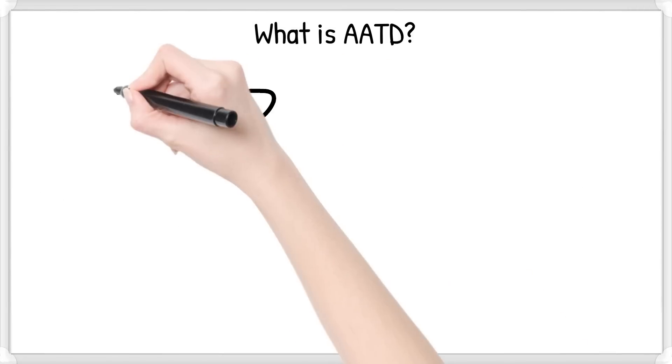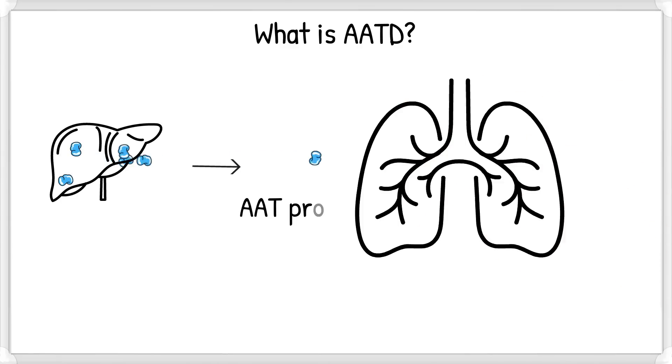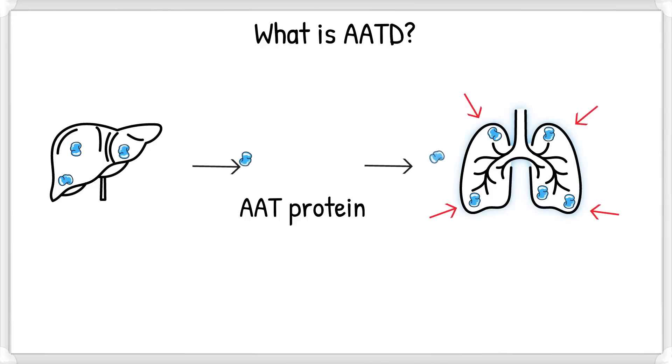So, what is AATD? Alpha-1 antitrypsin, or AAT, is a protein that is made in our liver cells, which then travels through the blood to the lungs, and protects our lungs from excessive inflammation. In individuals with AAT deficiency, or AATD, there is simply not enough AAT to do its job to protect the lungs.